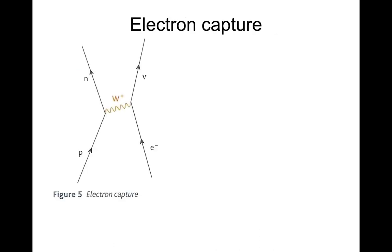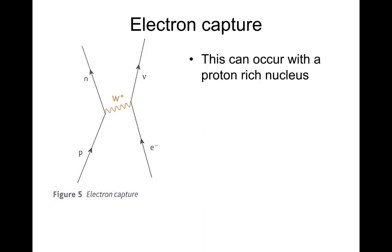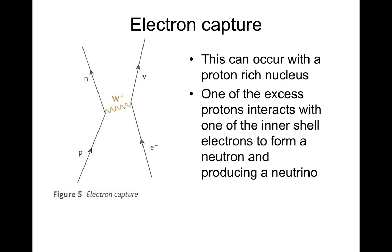Let's look at electron capture. This can occur within a proton-rich nucleus. One of the excess protons interacts with one of the inner shell electrons to form a neutron and produces a neutrino. Basically an electron in orbit drops into the nucleus and is absorbed into a proton — and you get a neutron. So a proton and electron come in, the W boson is the exchange particle, and you get a neutron and a neutrino at the top.